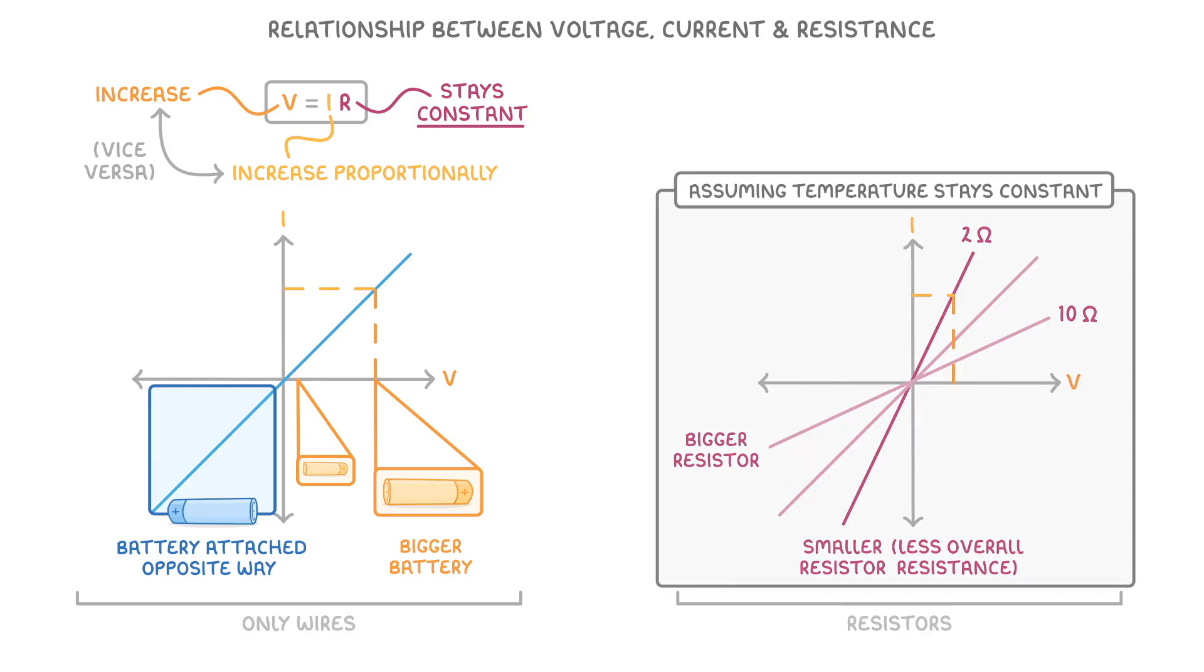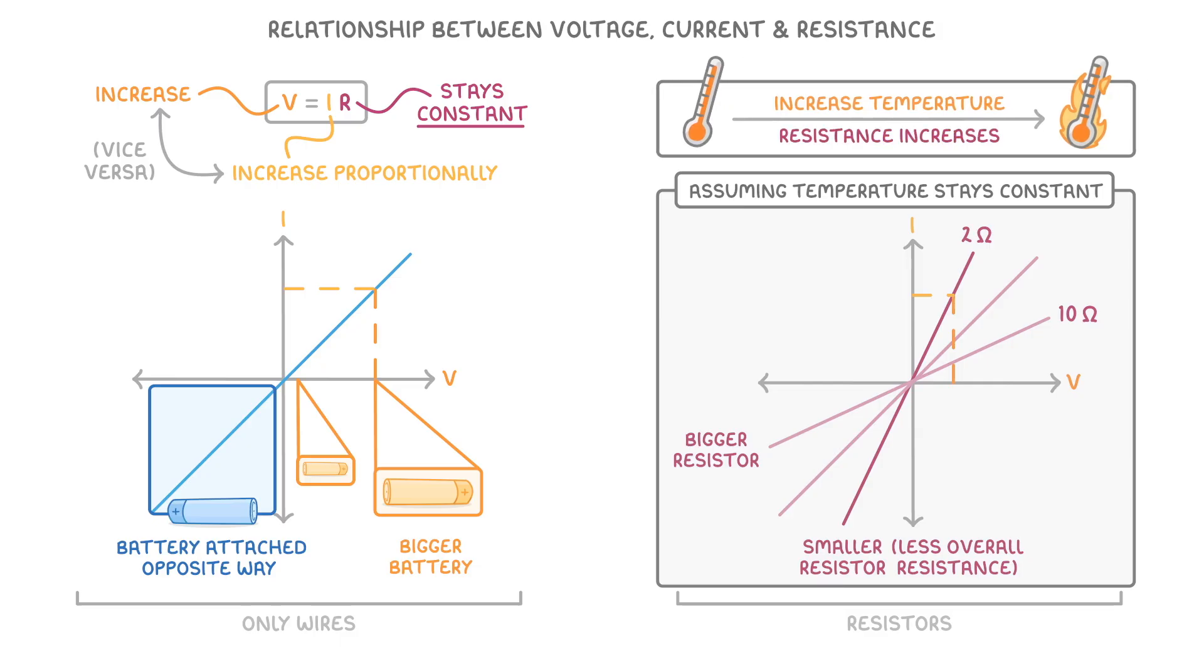One thing to mention here is that we're assuming that the temperature stays constant. If we increased the temperature, then the resistance would also increase. And in reality higher currents do generally cause wires to heat up if they're left on for a while. So in practice, the lines don't always look quite this straight.